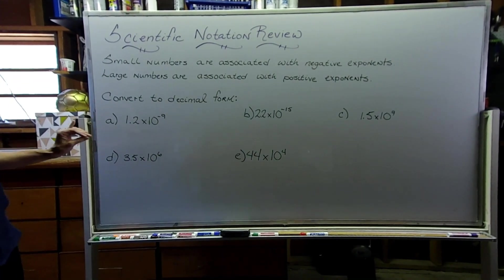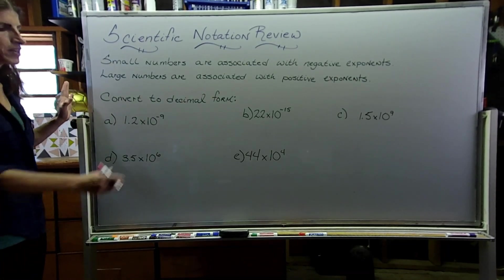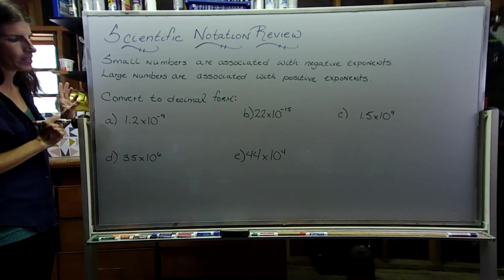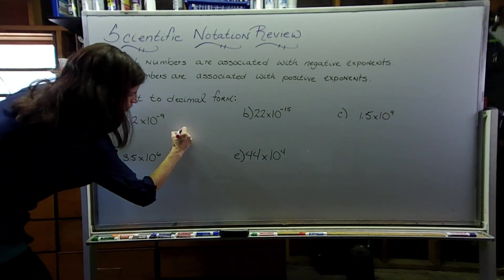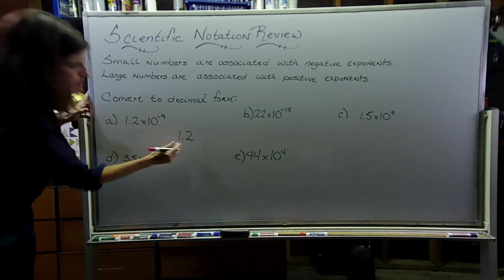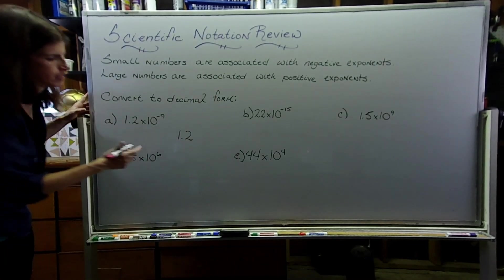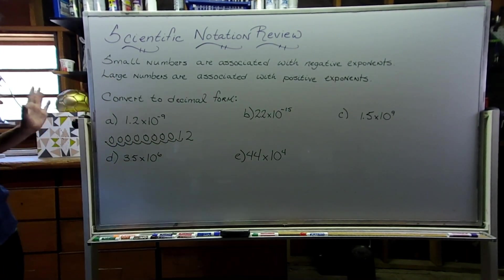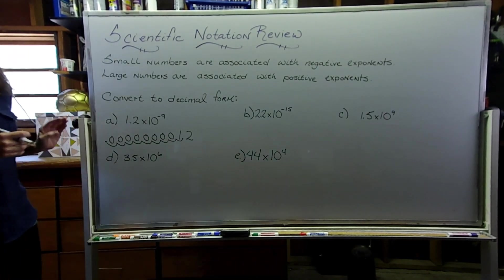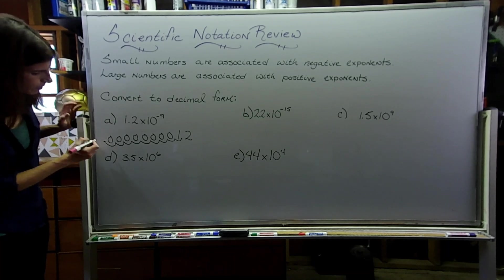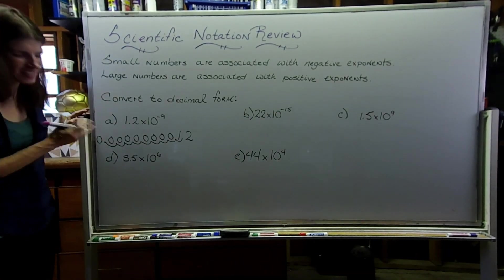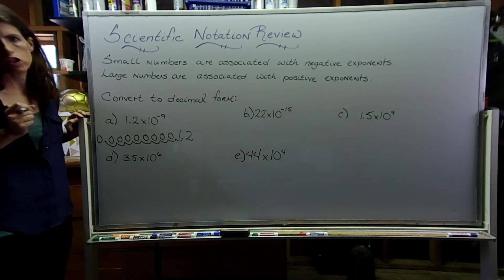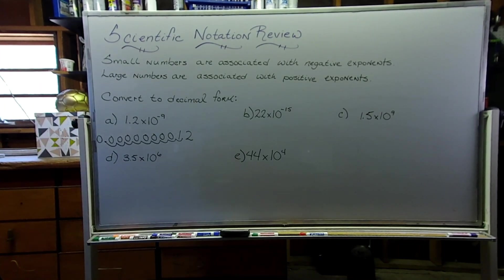So let's start with letter A. It has a negative exponent, so I know that number is going to become really small. I need to move my decimal point to the left here. I'm going to start with 1.2, and I'm going to move that decimal point 9 spaces to the left. After I put zeros in all those empty spaces, I wind up with 8 zeros. So we're going to have 0.0000000012 as our decimal form of 1.2 times 10 to the negative 9.